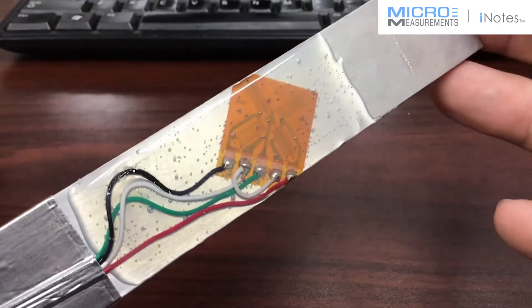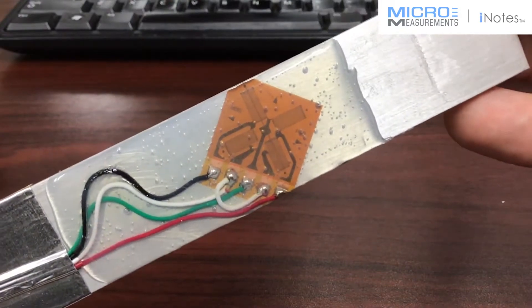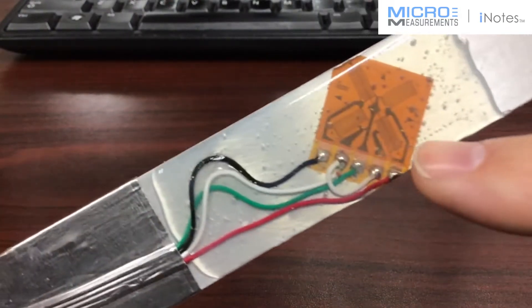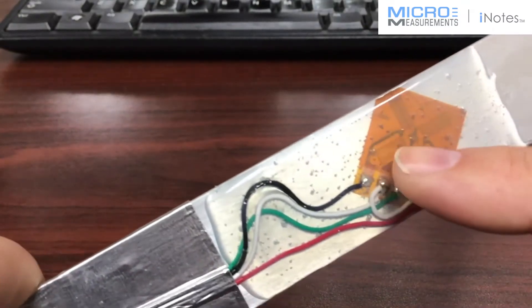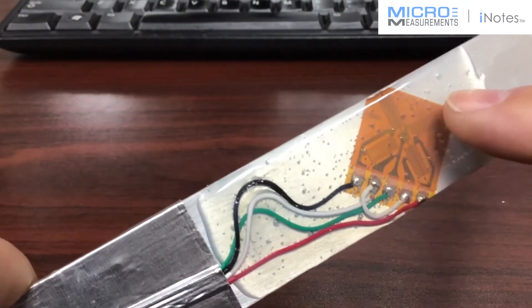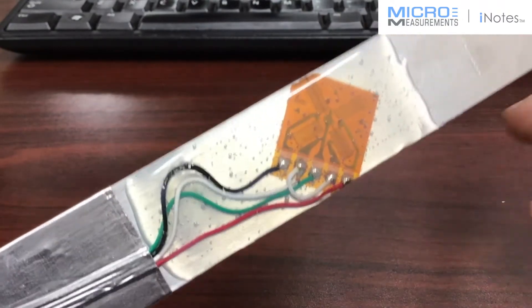This is one of the Micromeasurements 250 US patterns, and if you look closely at this gauge you'll see that it's got four sensitive grids on it, and these four sensitive grids are turned at a 45 degree angle to the side or the top of the strain gauge.